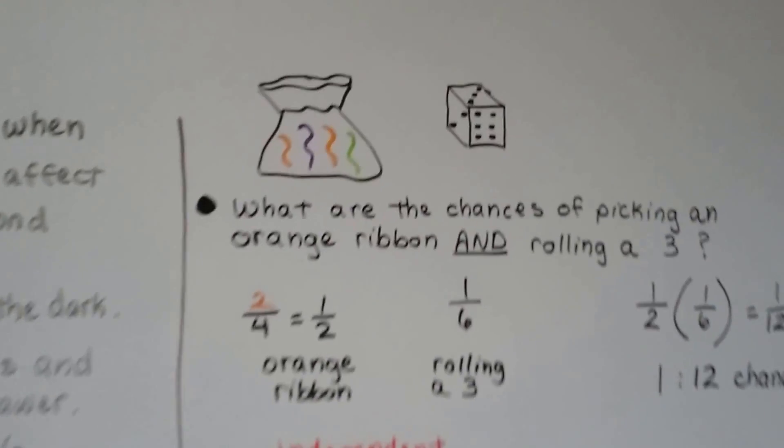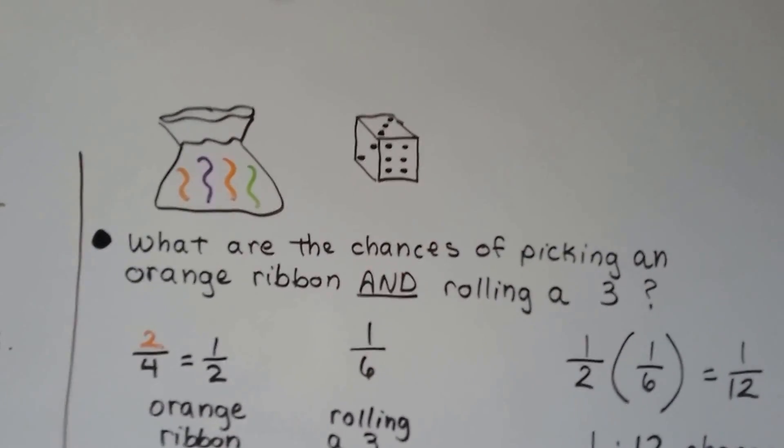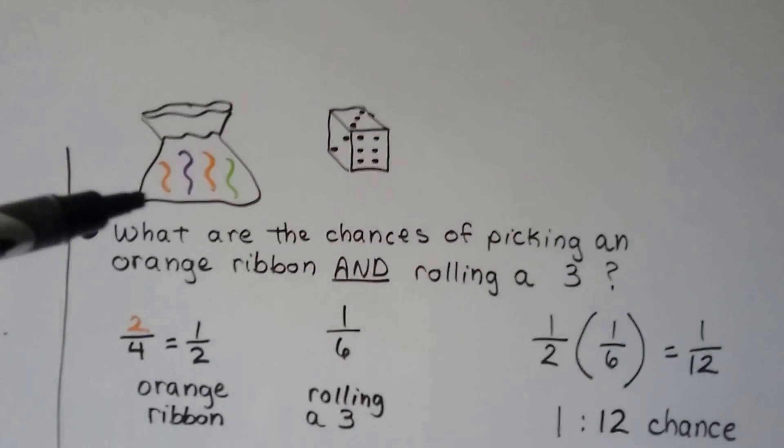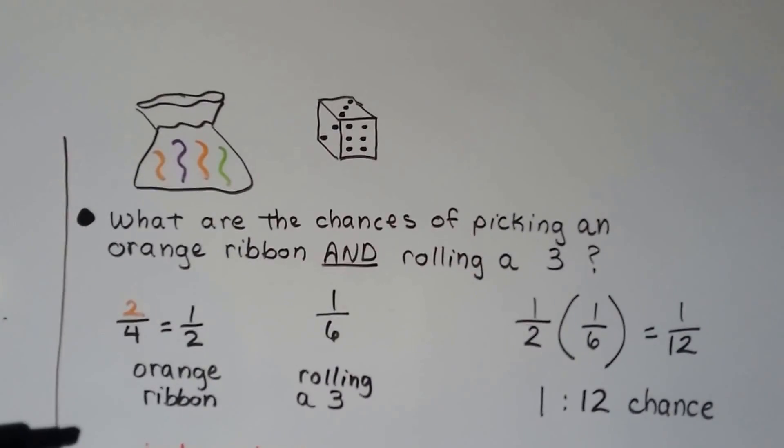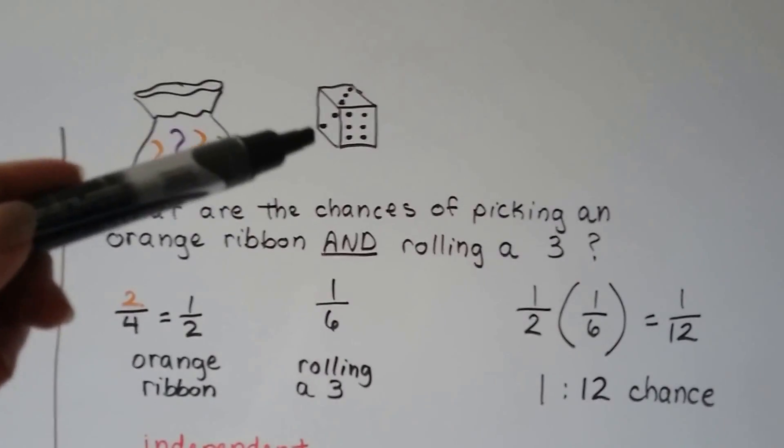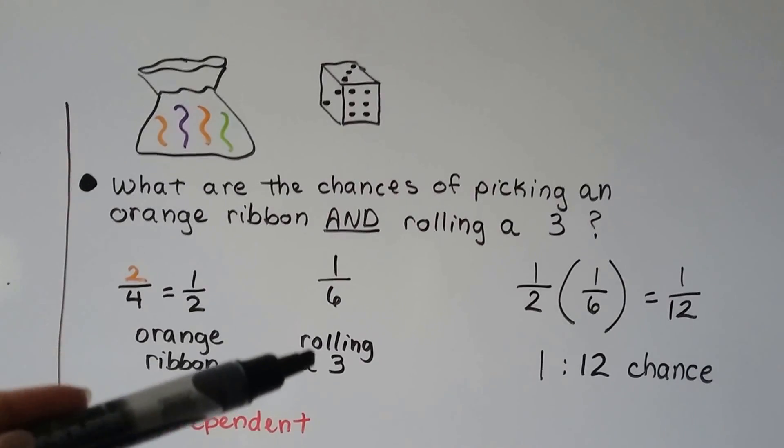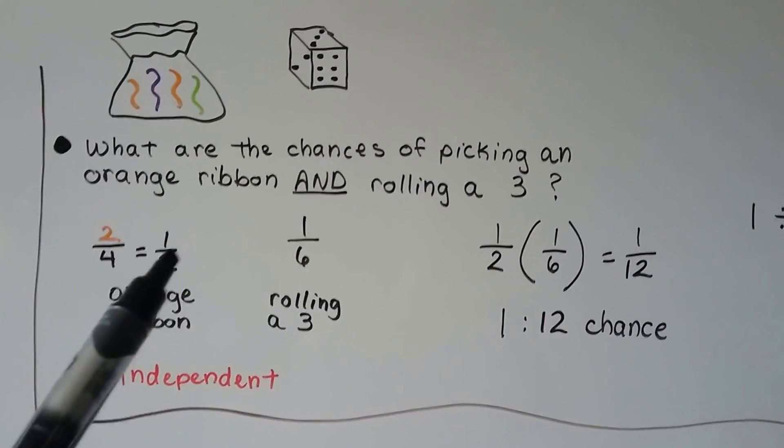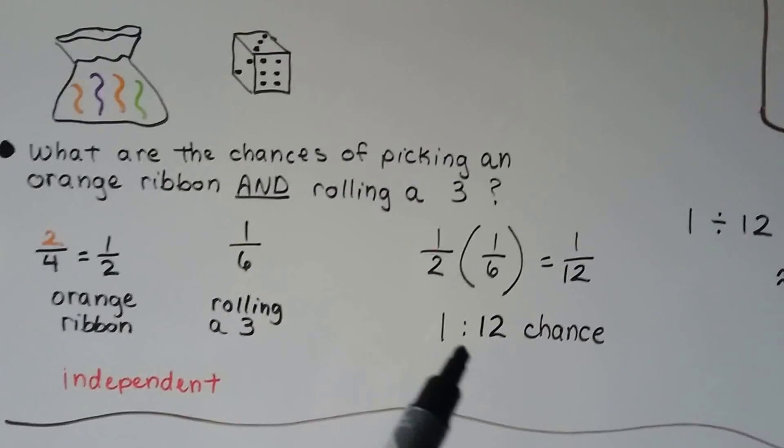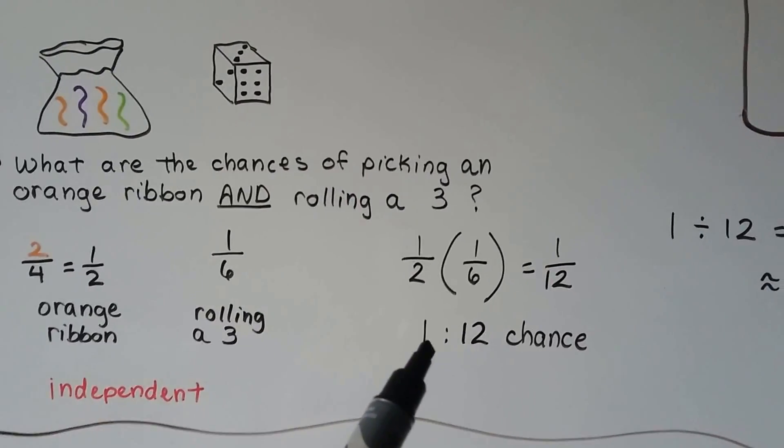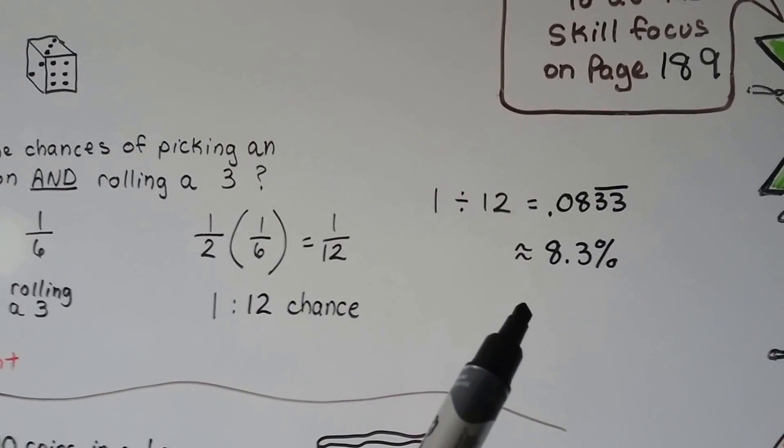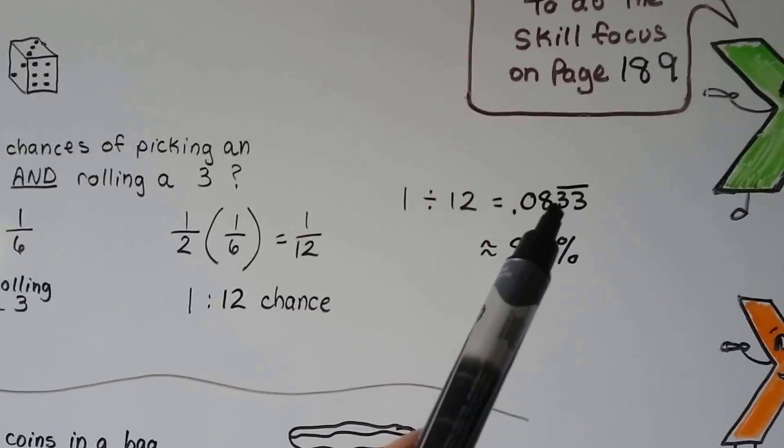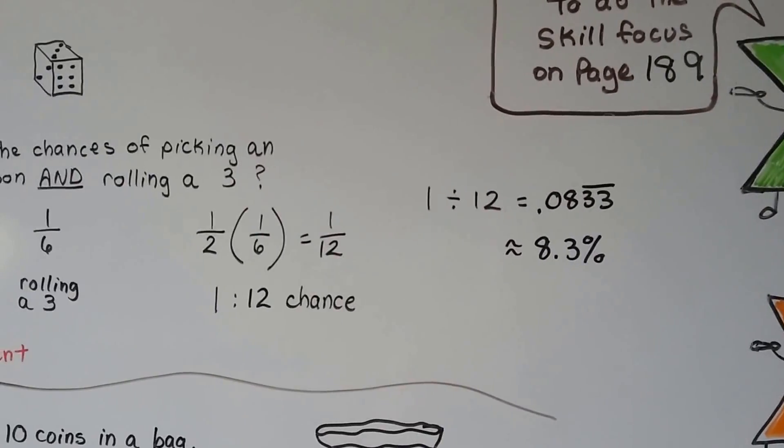Take a look at this one. We have a bag of ribbons and we have one die. When you have two of them, it's dice. When you have one of them, it's a die. What are the chances of picking an orange ribbon and rolling a three? Well, there's two orange ribbons here out of four, so we can reduce that to one-half. And there's six sides to this number cube and only one of them has a three on it, so we have a one out of six chance of rolling a three. These are independent of each other. How we pick the ribbon is not going to affect how we roll the dice. So we do the one-half times one-sixth and get one-twelfth. So we have a one to twelve chance of getting an orange ribbon and rolling a three. And we can divide one divided by twelve and get .0833 and the three repeats. And we can move the decimal point over to make it a percentage, and we get 8.3 approximately as our percentage.